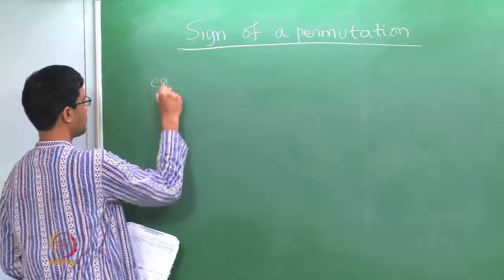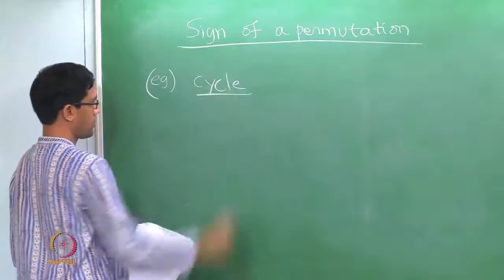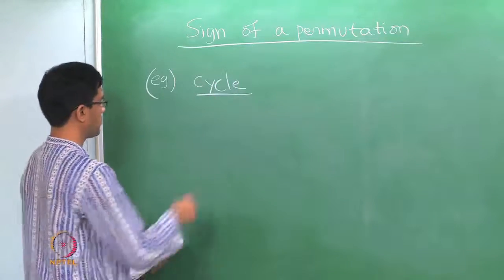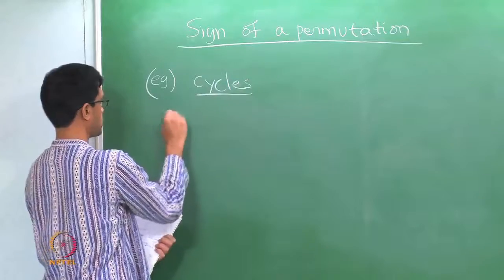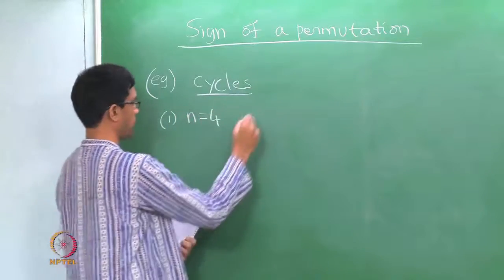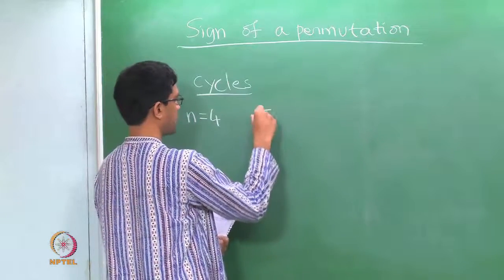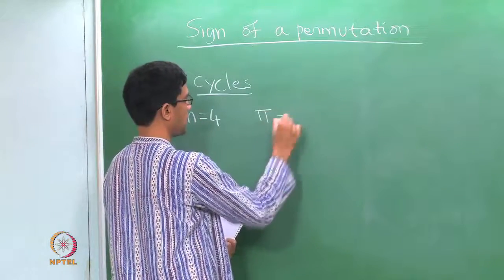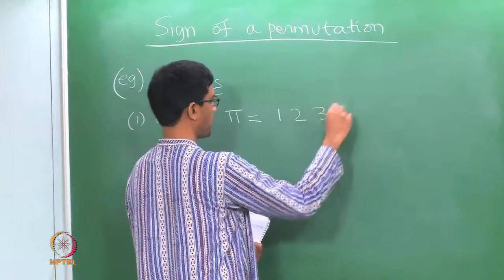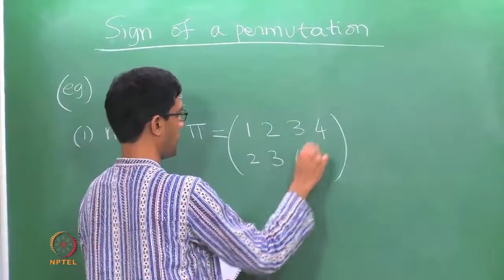Now let us do a few more examples. We want to find signs of cycles. Take n equals 4 and the permutation pi to be the cycle 1, 2, 3, 4. Written in two-line notation: 1 goes to 2, 2 goes to 3, 3 goes to 4, 4 goes to 1.